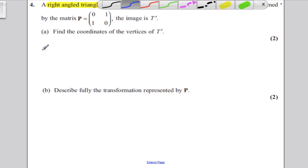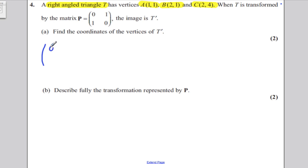Work out the coordinates of T prime. Now, what you need to do is you take your matrix P, 0, 1, 1, and 0, and you multiply it by the matrix that you form with the vertices of these.